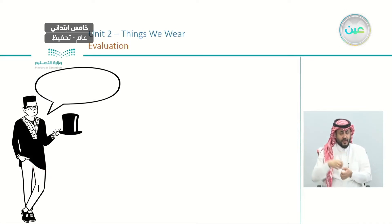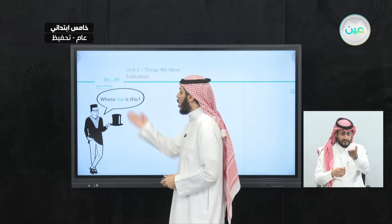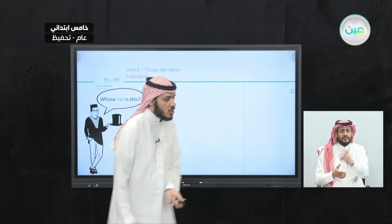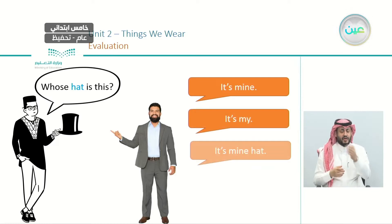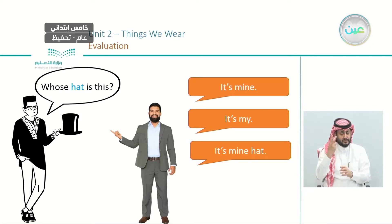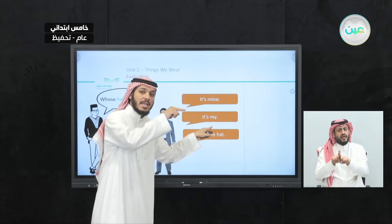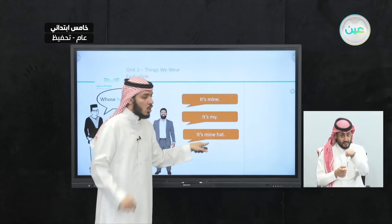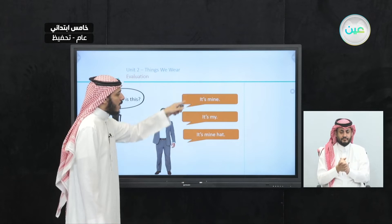Now, there's a man holding a hat. He says: 'Whose hat is this?' Which answer is correct — 'It's mine book,' 'It's my,' or 'It's mine'? It's mine! If you use 'my,' you have to say the noun after it: 'my hat.' If you use 'mine,' don't use any word after it. Just: 'It's mine.'